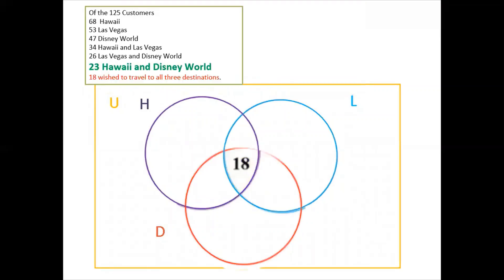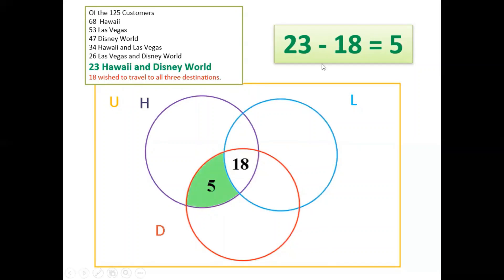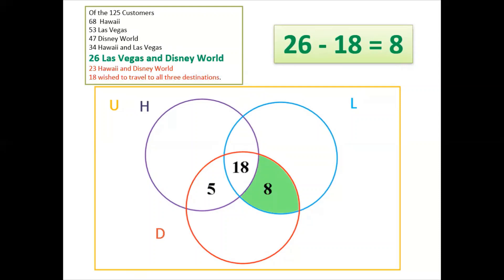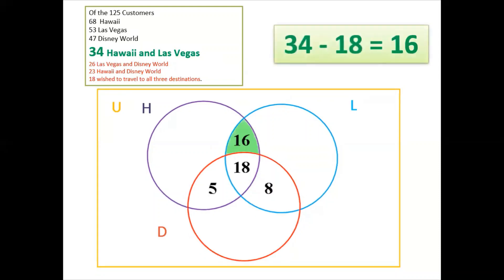Next, 23 want to go to Hawaii and Disney World — that is the intersection of Hawaii and Disney. Subtracting 18 from 23, we have 5. So 5 plus 18 is a total of 23. For Las Vegas and Disney World, we have 26 minus 18 equals 8. For Hawaii and Las Vegas, 34 minus 18 equals 16.